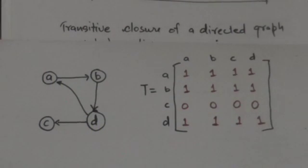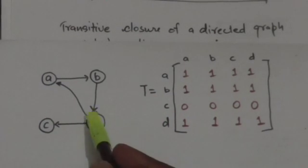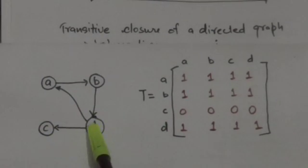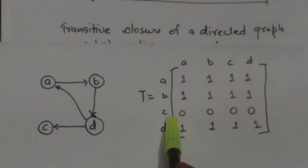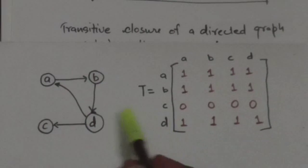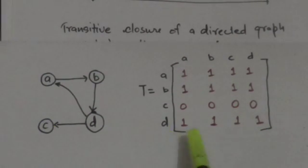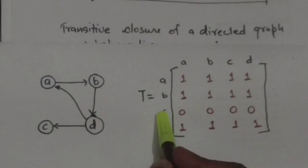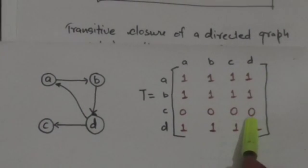There is no path from vertex C to vertex D in this directed graph, therefore in matrix T, which is the transitive closure of this graph, the element at the cth row and dth column is 0.